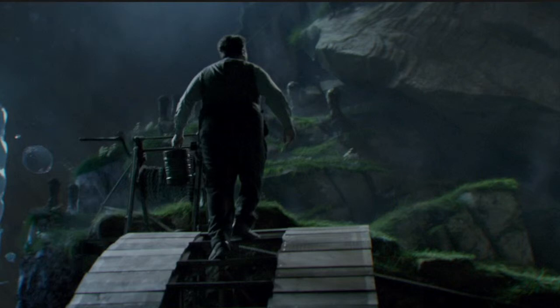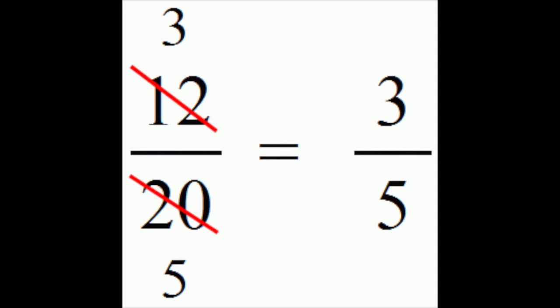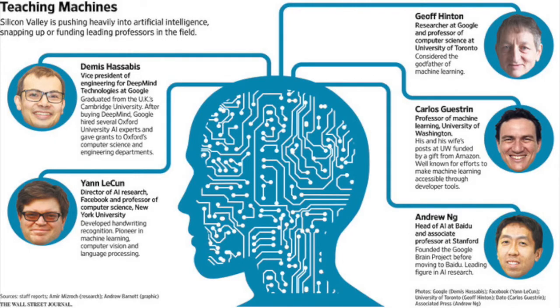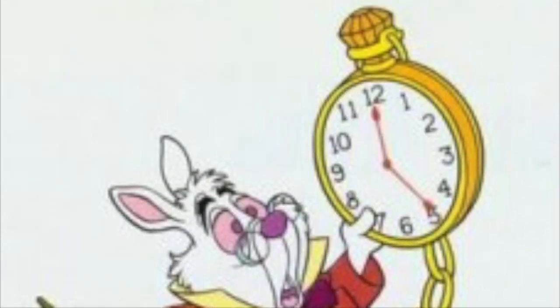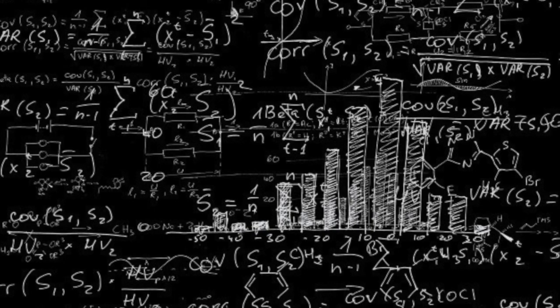The computational demands are just too high. For most of the book, however, we will adopt the working hypothesis that perfect rationality is a good starting point for analysis. It simplifies the problem and provides the appropriate setting for most of the foundational material in the field. Chapters 5 and 17 deal explicitly with the issue of limited rationality, acting appropriately when there is not enough time to do all the computations one might like.